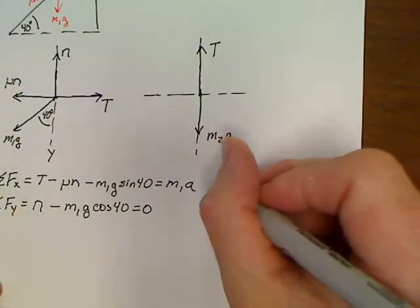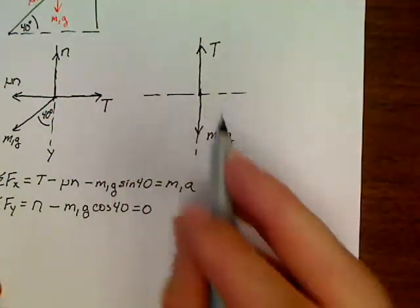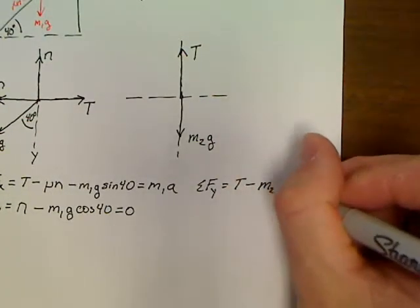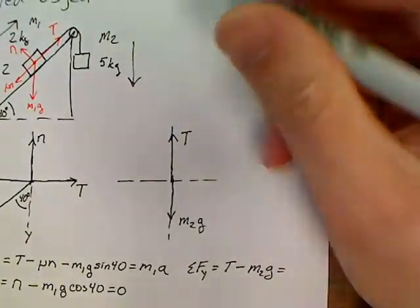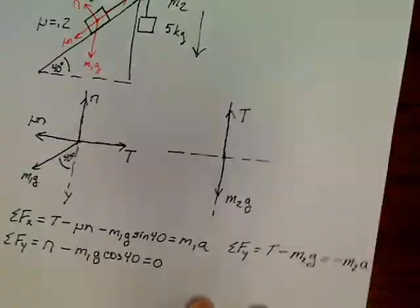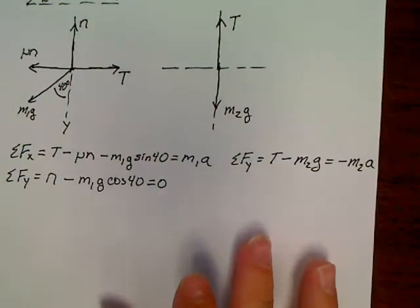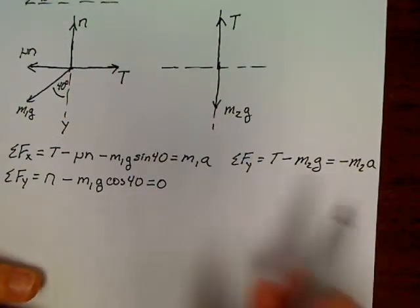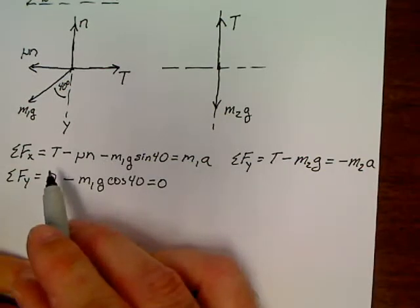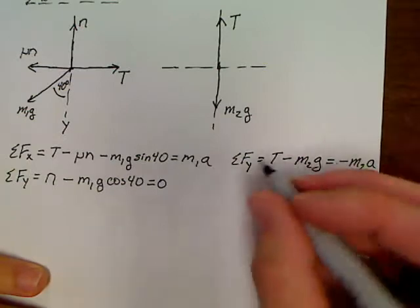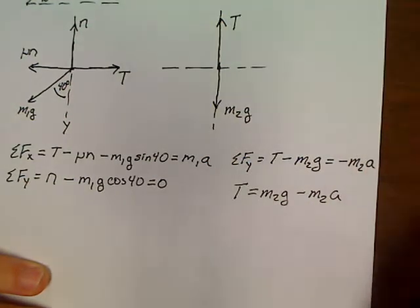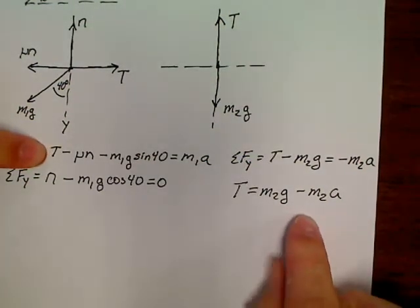Now, the other object's got a really easy sum of the forces. No x, just the y. So for the other object, we've got T minus M2G equals, once again, this object is my falling object, so I'm going to write equals negative M2A. Now, the physics is over. This problem is currently just an algebra problem now. When you get ready to take a look at it, it's going to be easier to solve this equation for T and plug it in here. Solve this equation for N and plug it in. So if we solve this equation, T would be equal to M2G minus M2A. Let's take and let's plug that in right here on the other side.